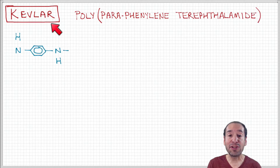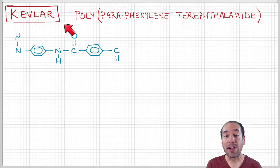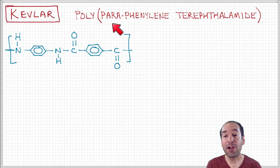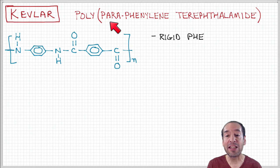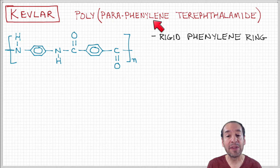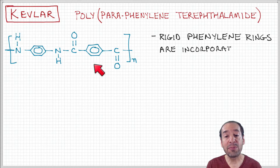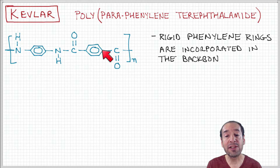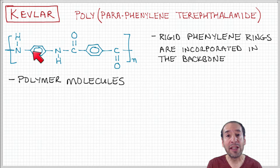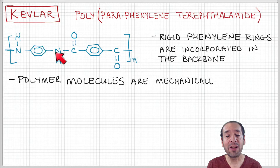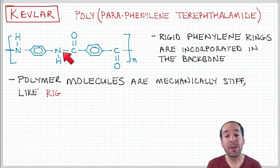Kevlar is a trade name for poly-para-phenylene terephthalamide. Notice that the structure of this repeat unit has these rigid carbon ring groups incorporated directly on the polymer backbone. Remember, in polystyrene we had these groups as well, but they were side groups on the carbon-carbon backbone.